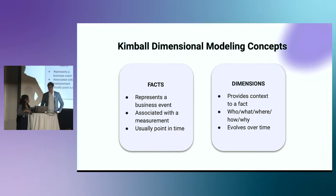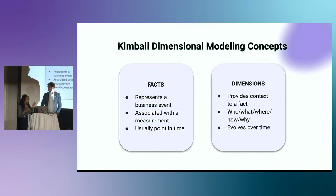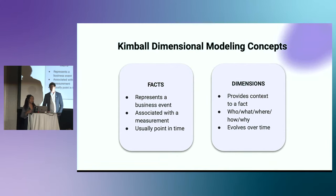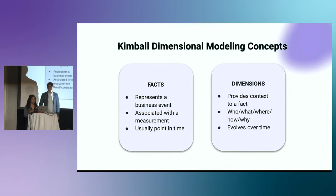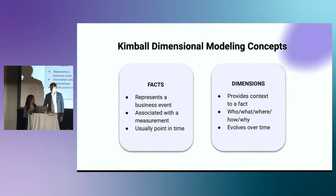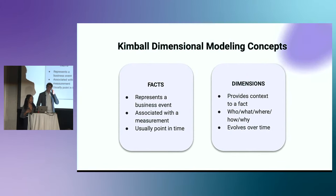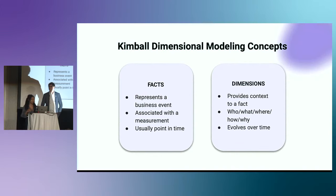What sets Kimball's methodology apart from other methodologies are two ideas: facts and dimensions. A fact is going to represent a business event, usually associated with some kind of measurement — so that could be dollars in revenue or number of units sold — and it's usually going to be representative of a single point in time. Whereas dimensions are what provide context to our facts, a lens to view our facts through. That's going to be the who, what, where, how, and why of our facts. Dimensions can evolve over time — things like IDs, names, dates.